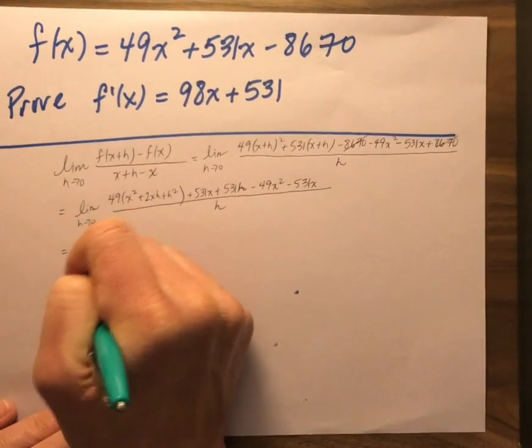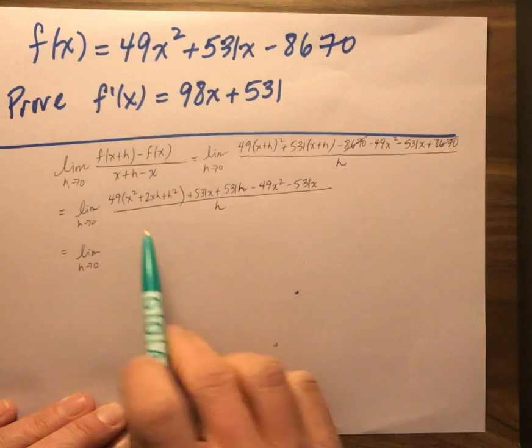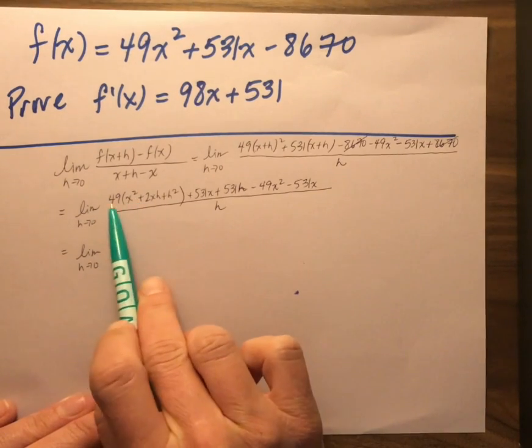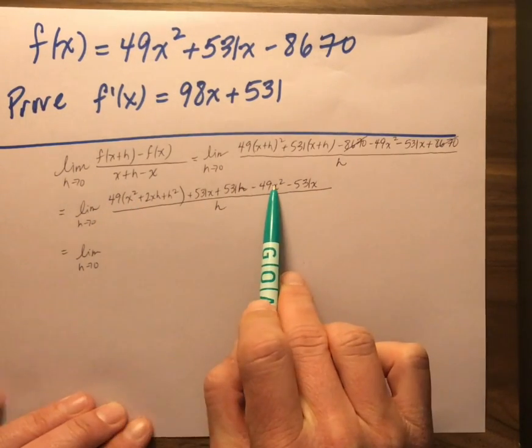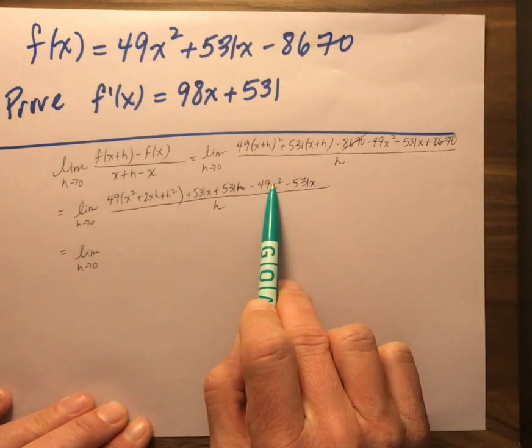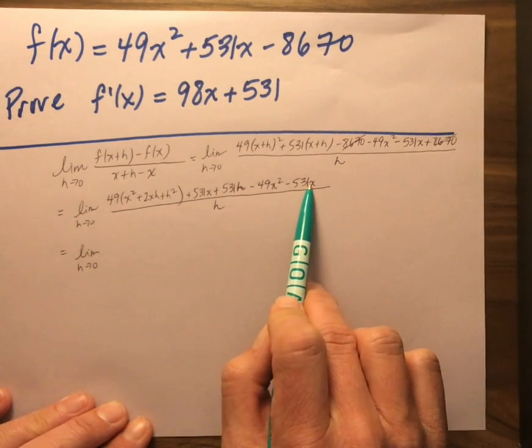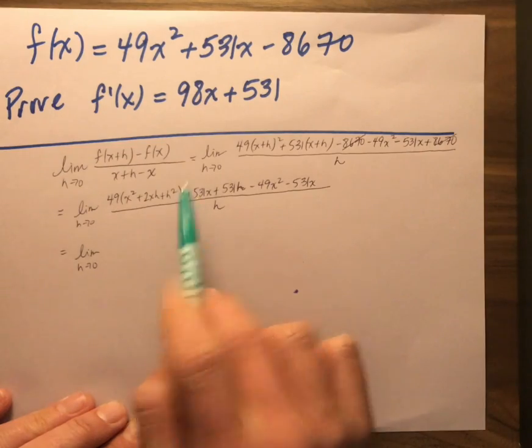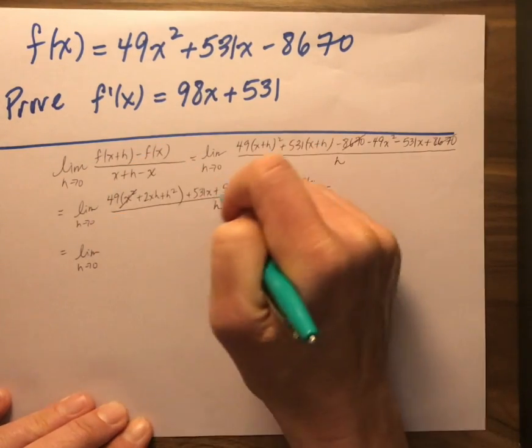So moving on. I know when I distribute the 49x squared, I'm going to have a positive 49x squared minus a 49x squared. And I know the way this game is played. I know other stuff is going to cancel out. Negative 531x plus 531x. So I'm going to go boom, boom.